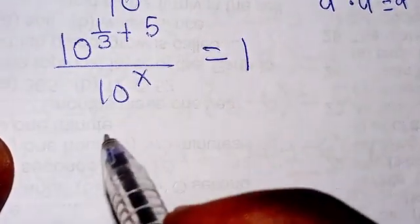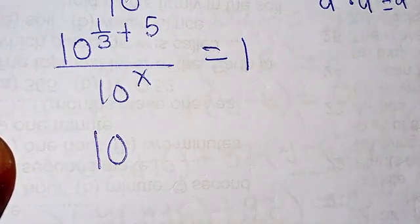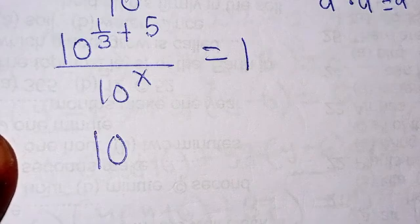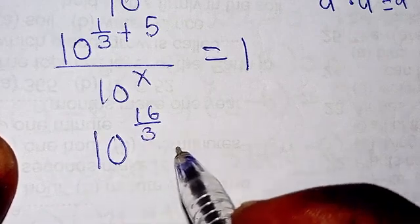So from there we are going to have 10 to 5 plus 1 over 3. That's going to give us 5 whole number 1 over 3, and 5 whole number 1 over 3 is going to give us 16 over 3.